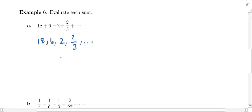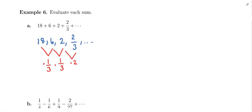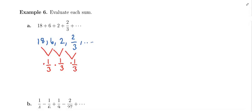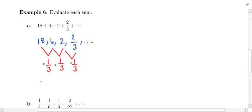The common ratio is always the number you're multiplying by. To go from 6 to 2, we multiply 6 by 1/3 — 6 times 1/3 gives you 2. To go from 2 to 2/3, you multiply by 1/3 as well — 2 times 1/3 gives you 2/3. This tells us this is a geometric sequence, so adding the terms up makes this a geometric series. We know the common ratio is 1/3.